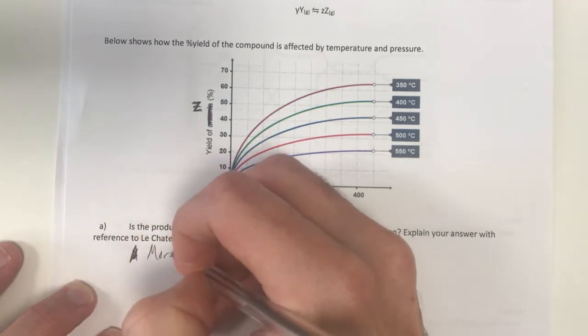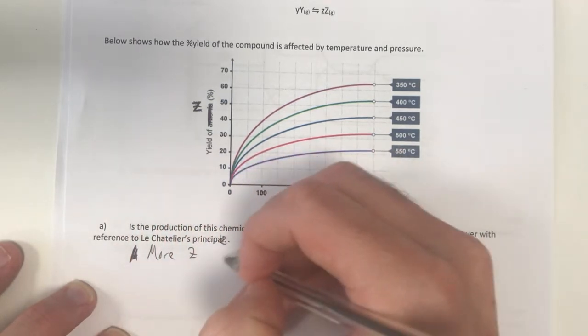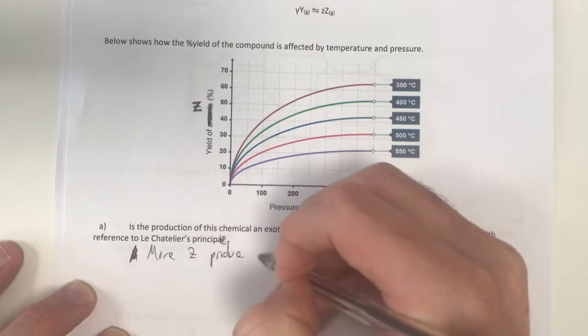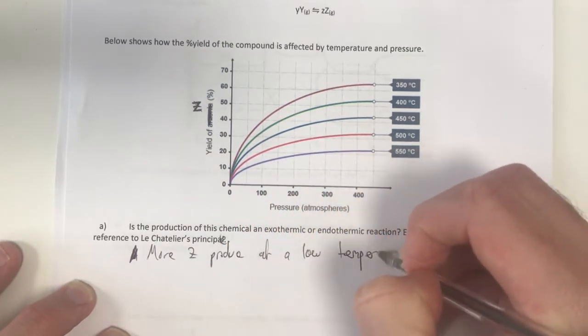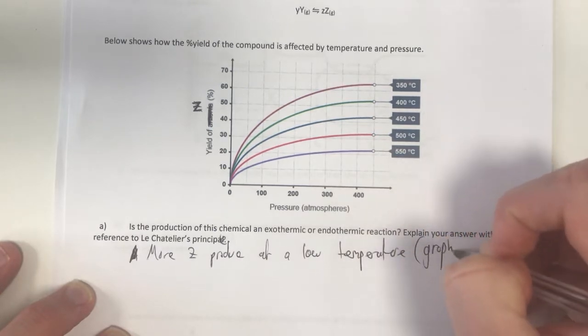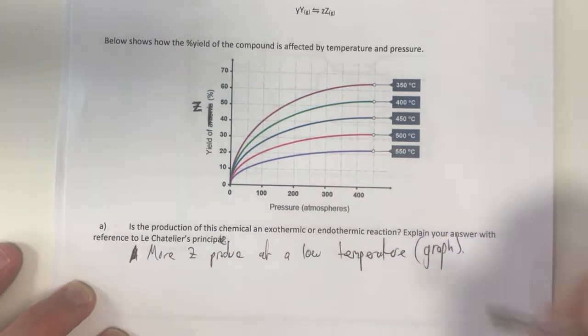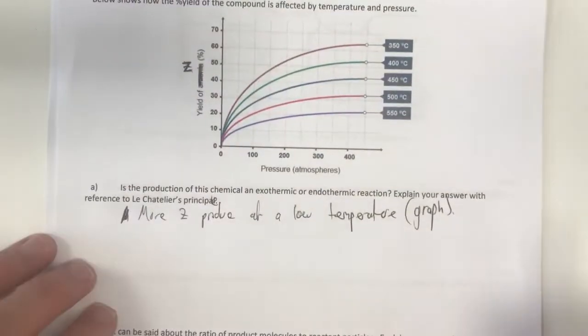What happens? We have a higher yield at a lower temperature. There is more z produced at a low temperature. That's from the graph. From our graph we can see that. So I'm going to state that straight away, because that's something I know.